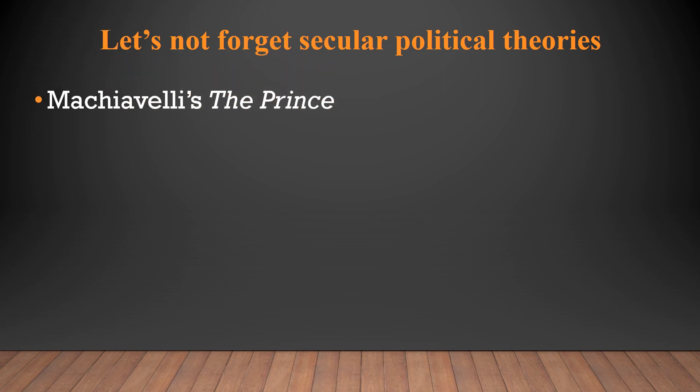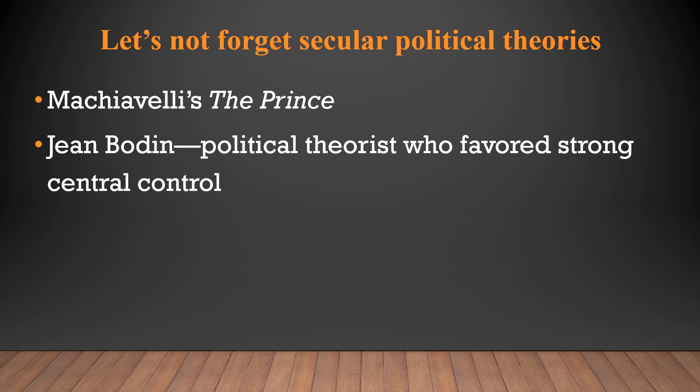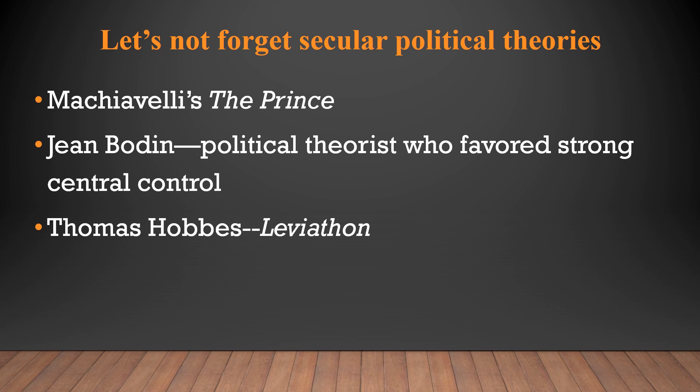Don't forget about secular political theories. Machiavelli's The Prince was still the most important treatise of the time period regarding politics and power. Jean Bodin was also a political theorist who favored strong, centralized control. Thomas Hobbes, in his Leviathan, essentially created a social contract between those that rule and those that are ruled. Rulers were given unlimited power according to Hobbes, because those ruled were seen as nasty, brutish people that needed a strong ruler to keep order. Common people would give up certain rights in order to gain rule that would keep them in order and prevent anarchy.